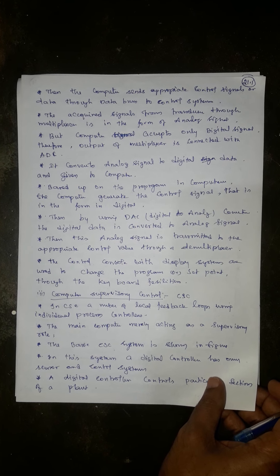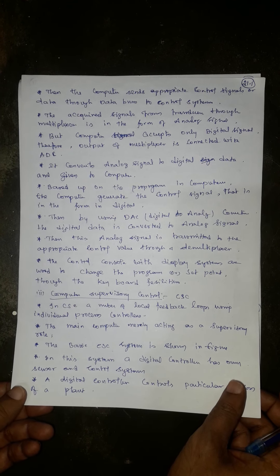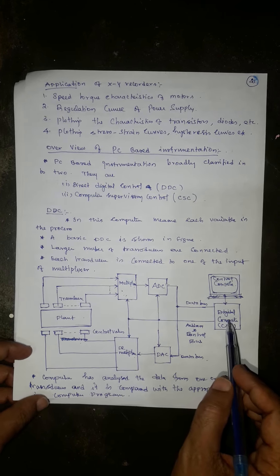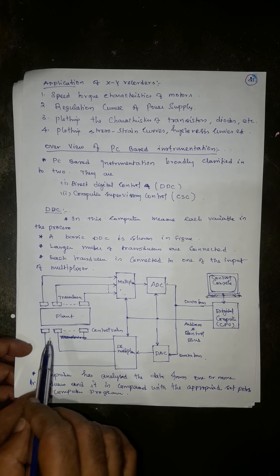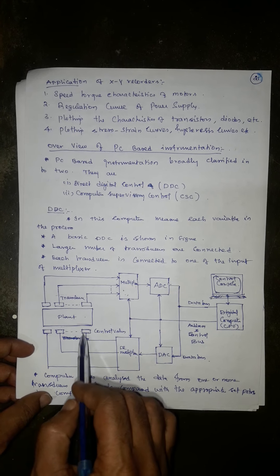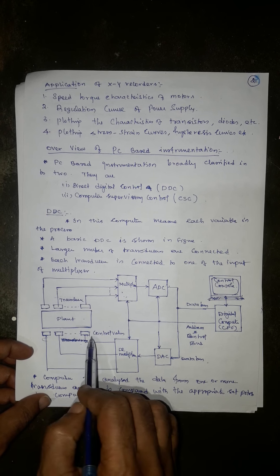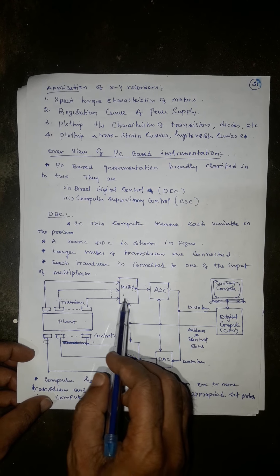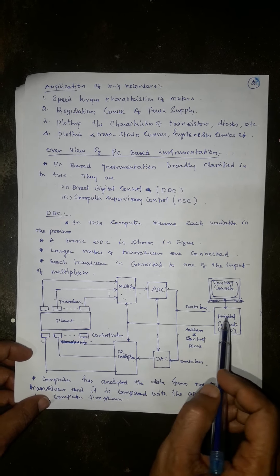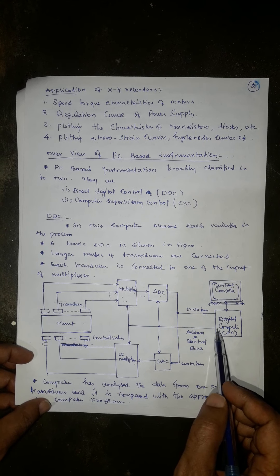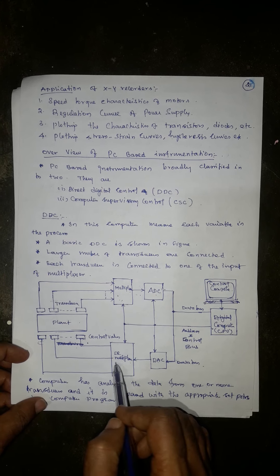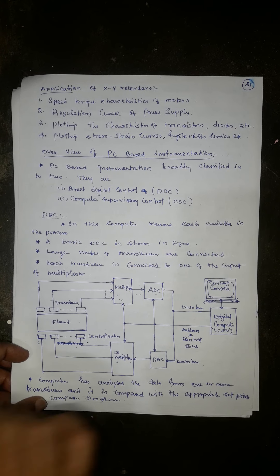The control console with a display system is used to change the program or set point through a keyboard. Any number of transducers or control valves can be programmed through the digital computer console. In the block diagram: the transducer feeds into the multiplexer; the analog output is converted to digital and given to the computer; the computer generates a digital control signal; that digital data is converted back to analog and given to the demultiplexer; and the final control element operates in analog form.